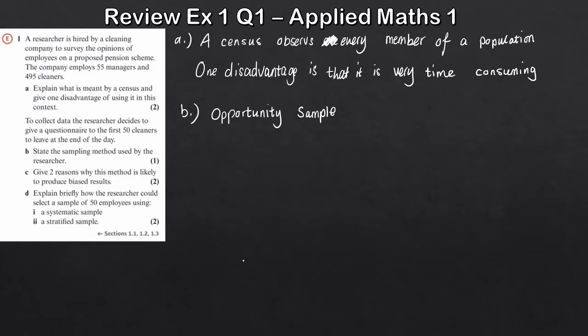Part C - give two reasons why this method is likely to produce biased results. One, the first one is that it's not a random sample. If it's just the first 50 people, it's definitely not random. Then if you think about the actual context of what's happening, if these 50 workers - the first 50 cleaners - are leaving at the exact same time, they're going to be the first 50 cleaners.